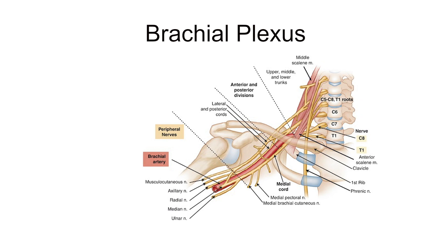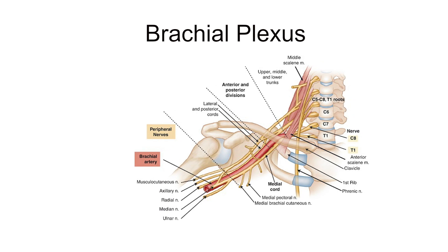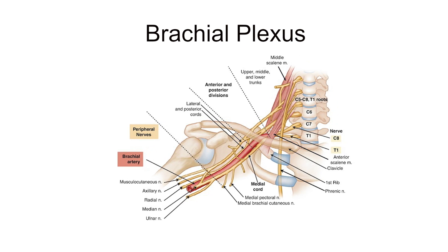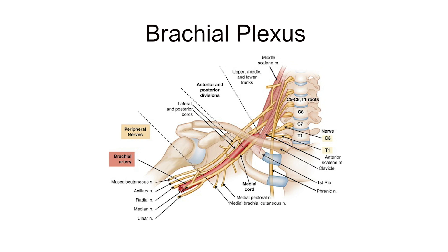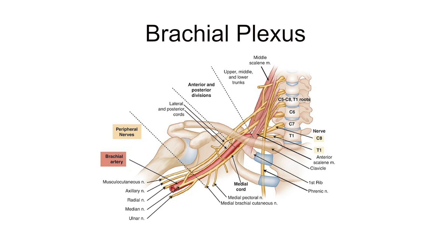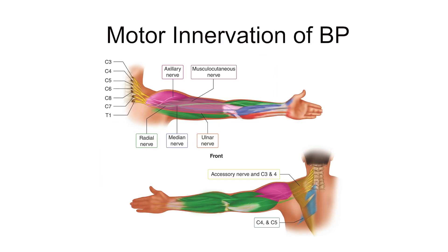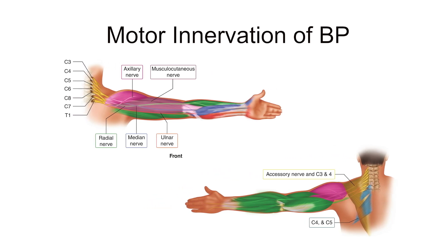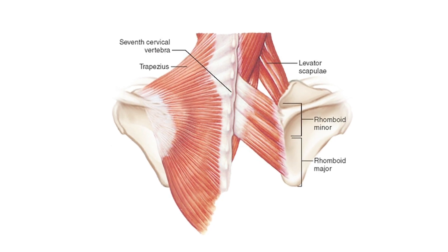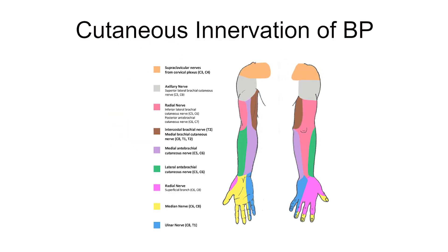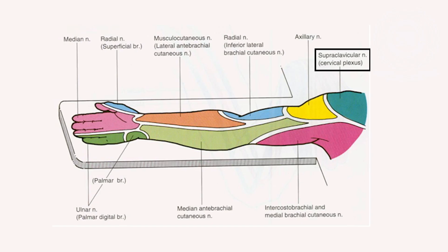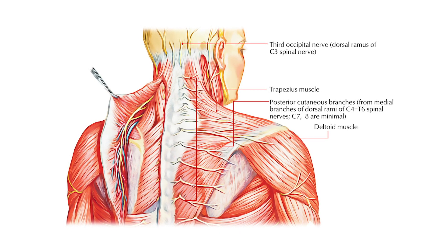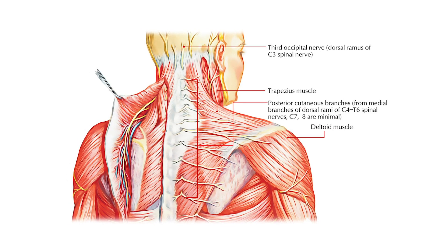Brachial plexus, or plexus brachialis, is a somatic nerve plexus formed by the intercommunications among the ventral rami of the lower four cervical nerves — C5, C6, C7, and C8 — and the first thoracic nerve, T1. The plexus is responsible for the motor innervation of all the muscles of the upper extremity with the exception of trapezius and levator scapulae. The brachial plexus supplies all the cutaneous innervation of the upper limb except for the area of the axilla, which is supplied by the supraclavicular nerve, and the dorsal scapular area, which is supplied by the cutaneous branch of the dorsal rami.